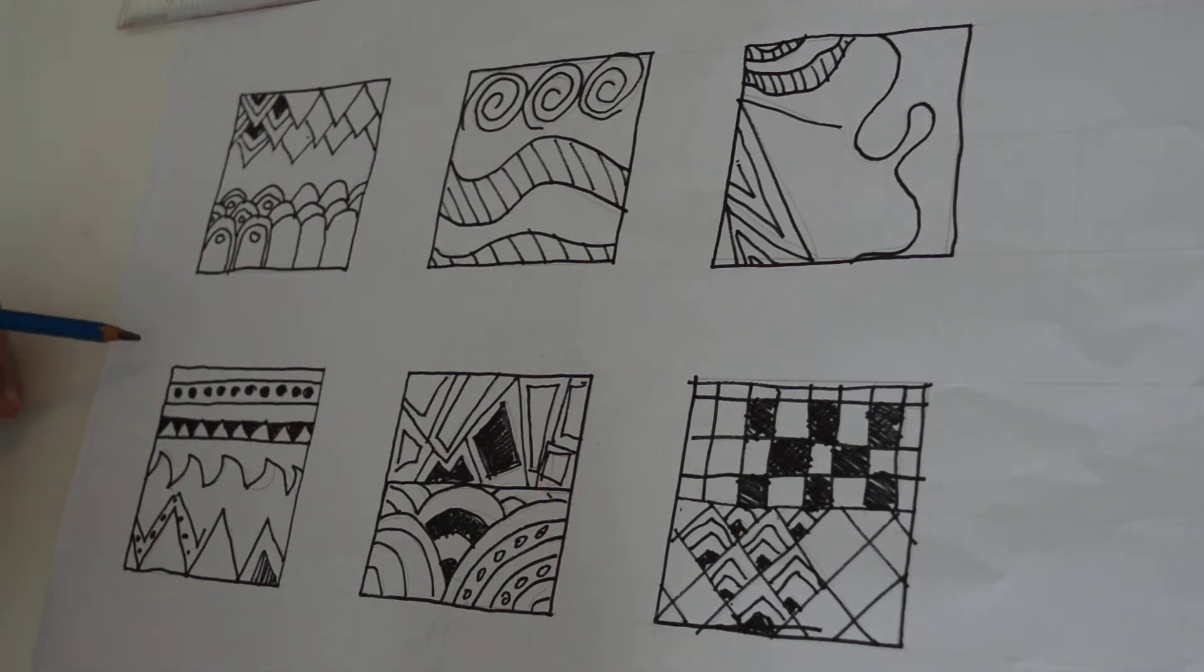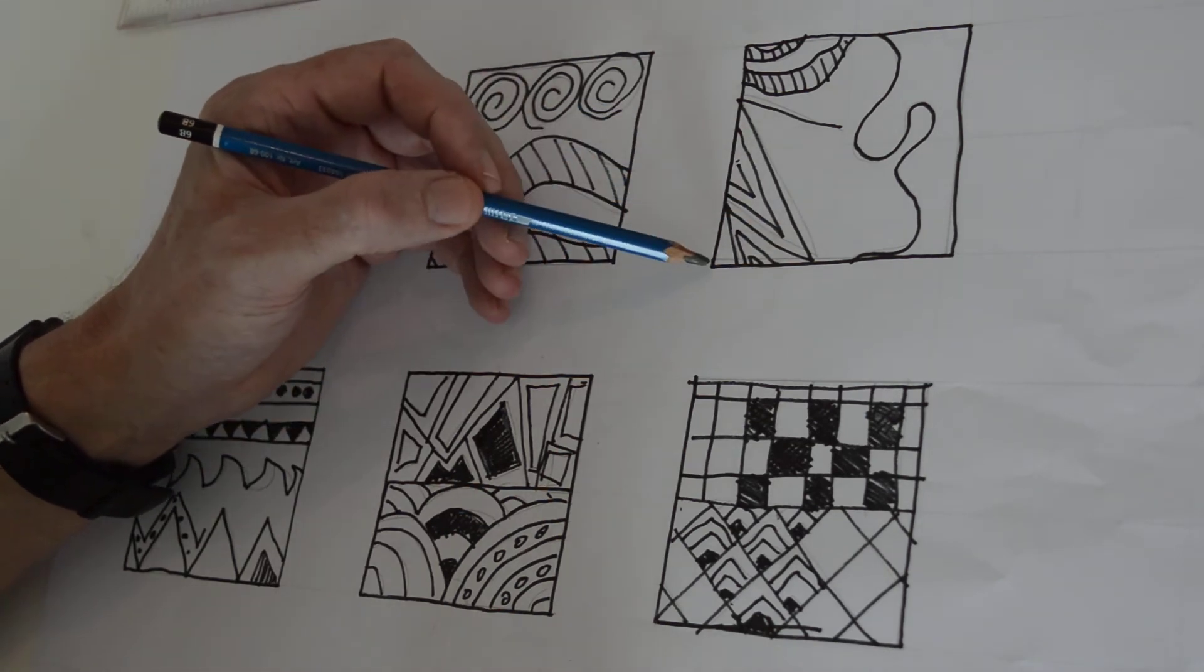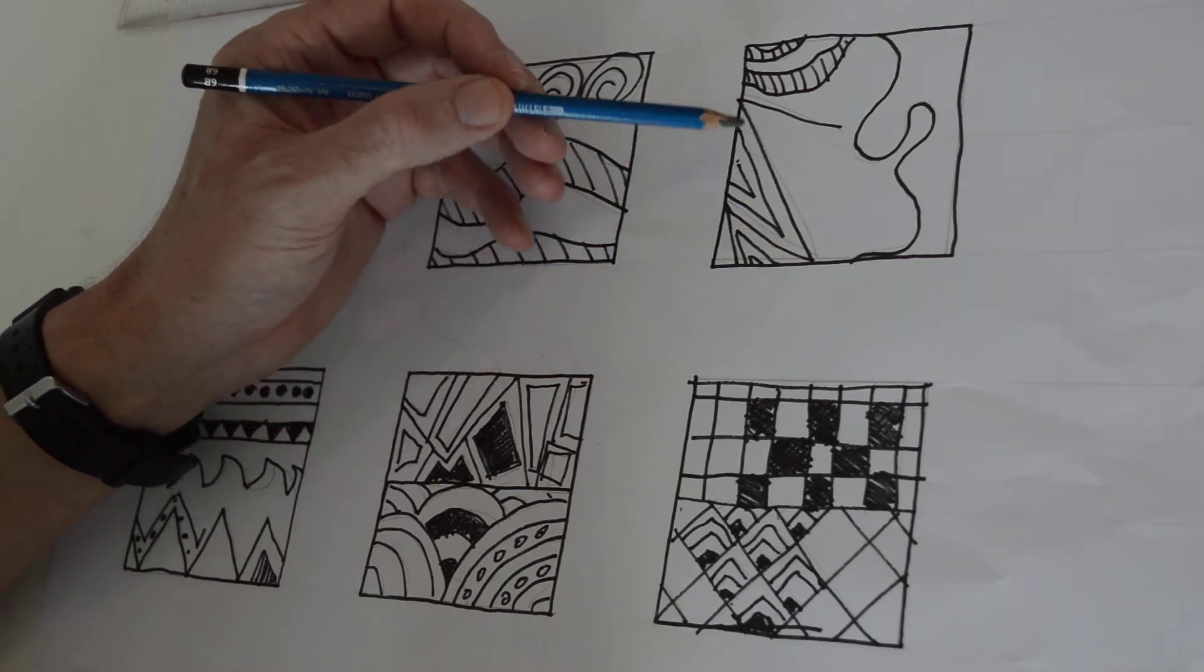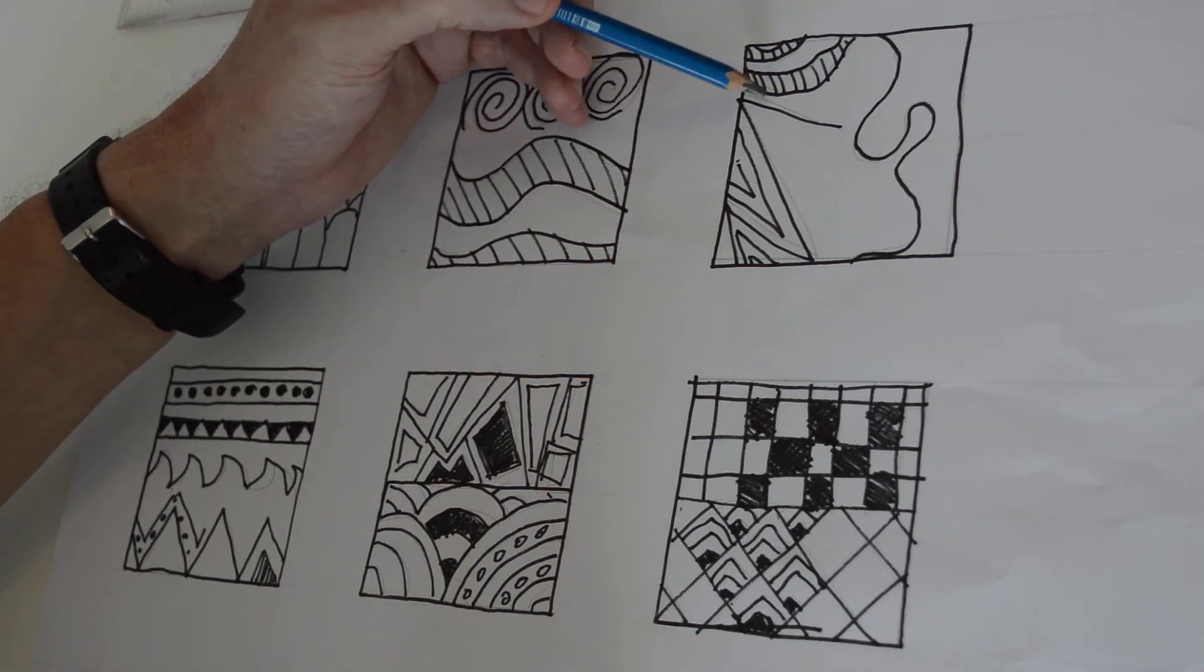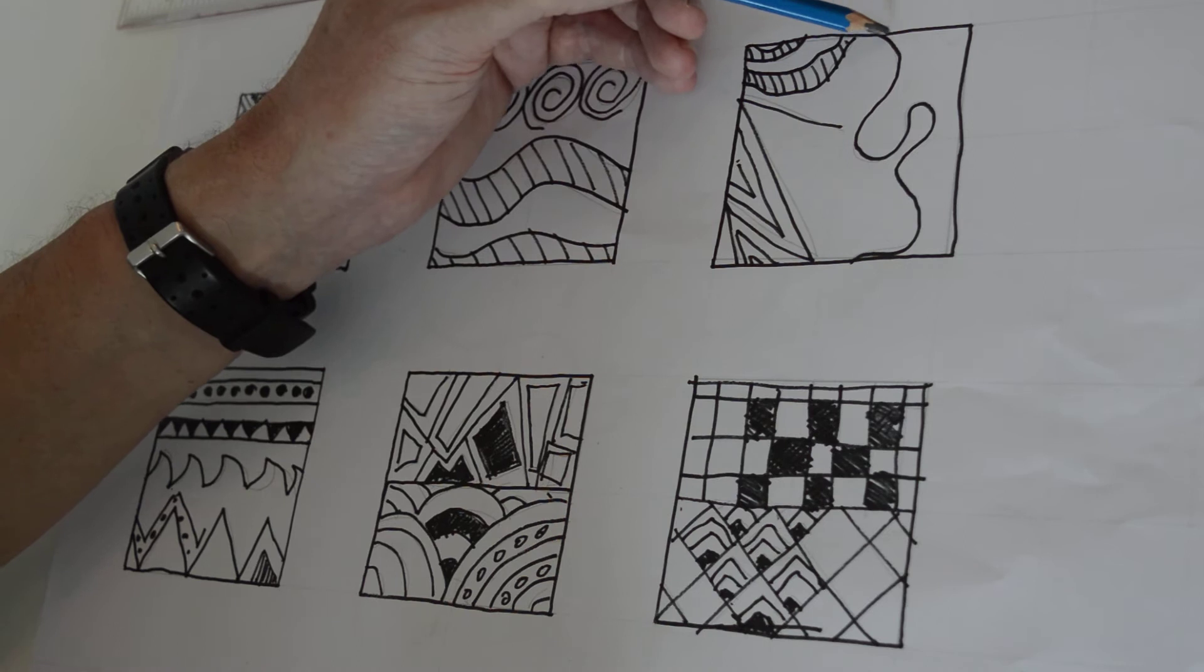Over here, what I've played with is just using zigzags and offsetting the zigzags in a different way. I've looked at the idea of putting lines in and cross-hatching and where I can add color and the idea of big curved lines to break up an area.